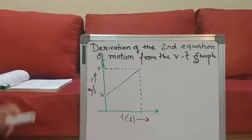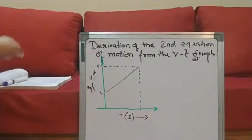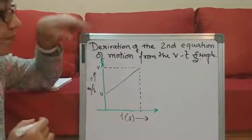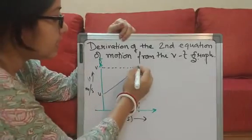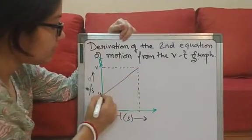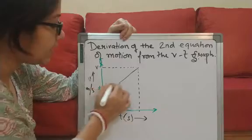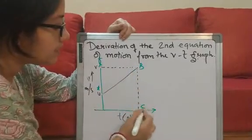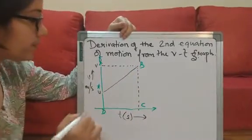And how much is the time spent? The time spent is t seconds. Now let me just name it. Let us say this is a, b, c and d.